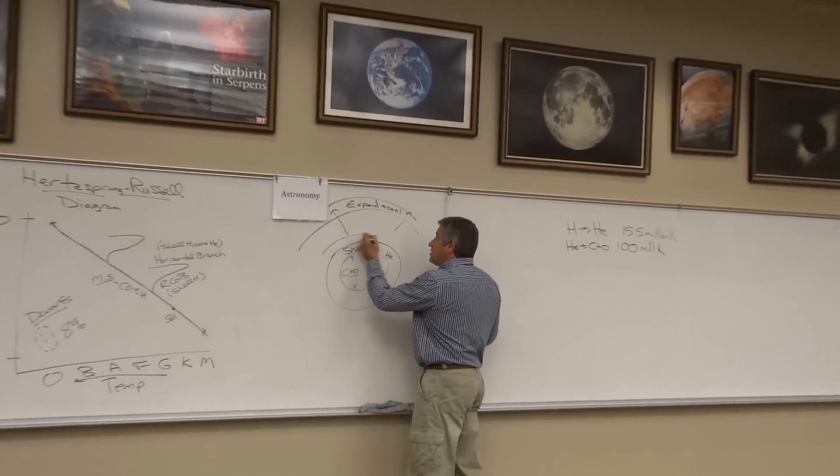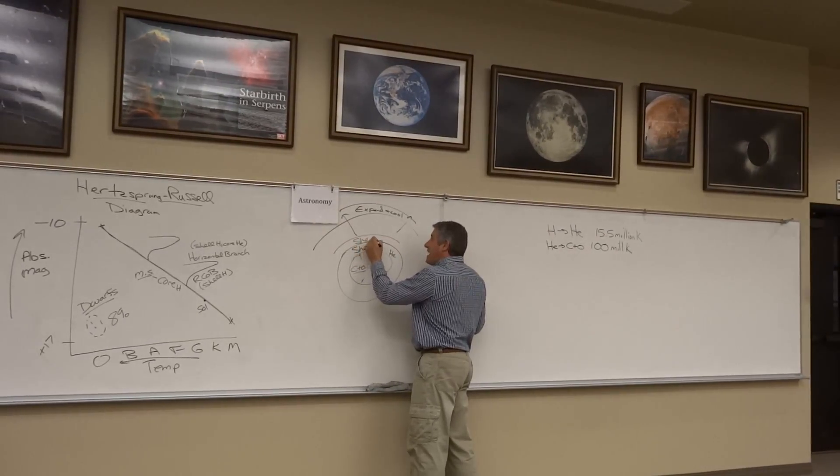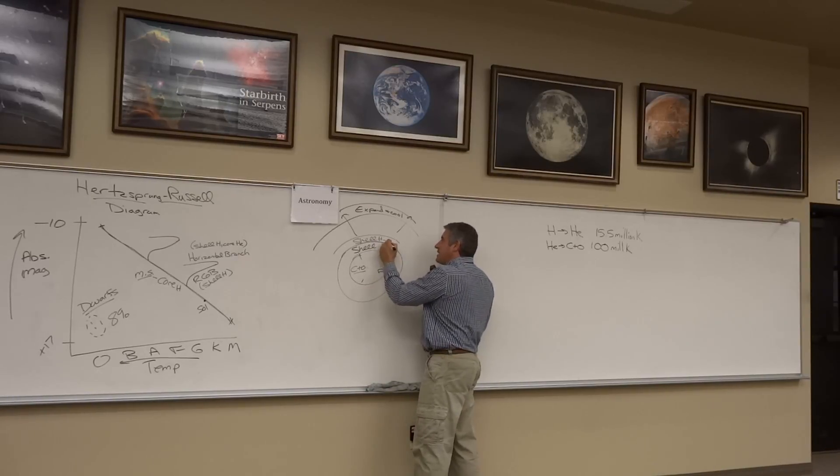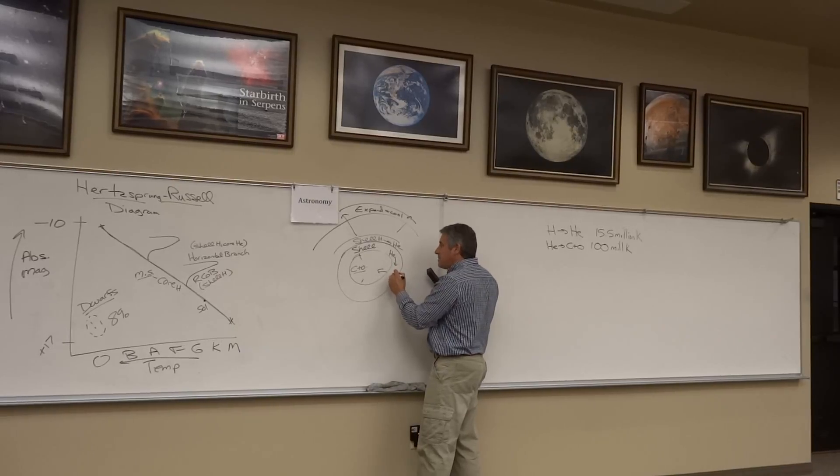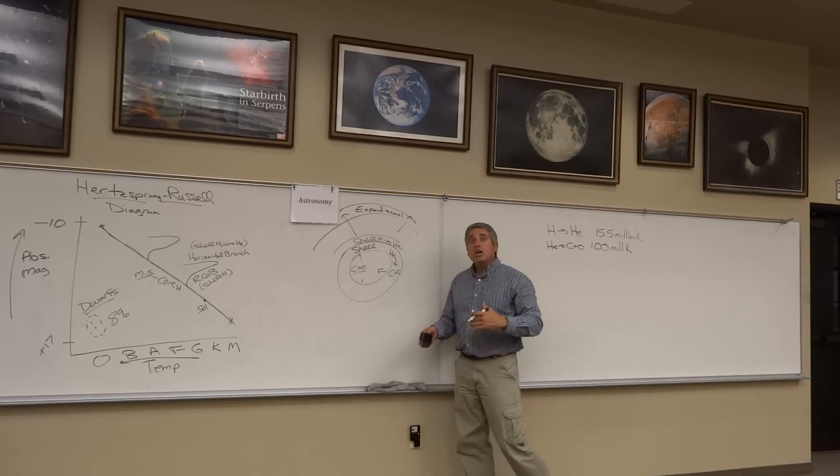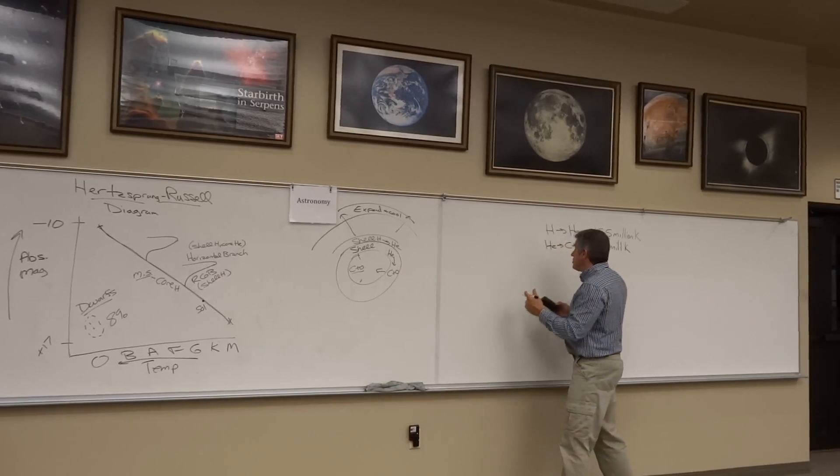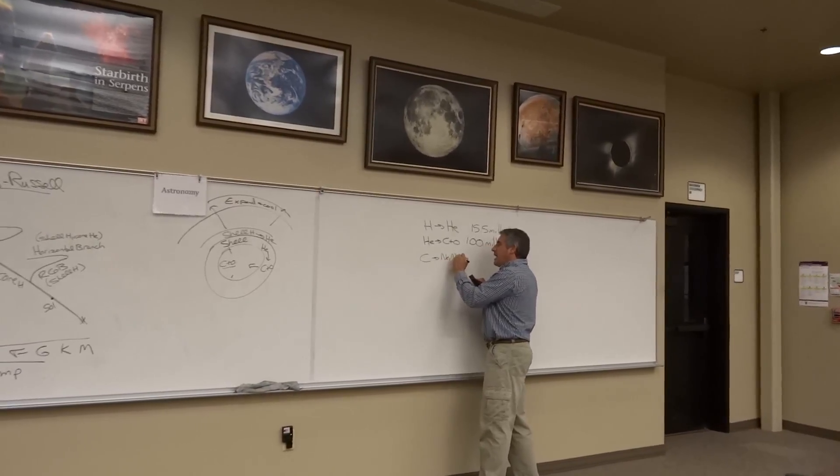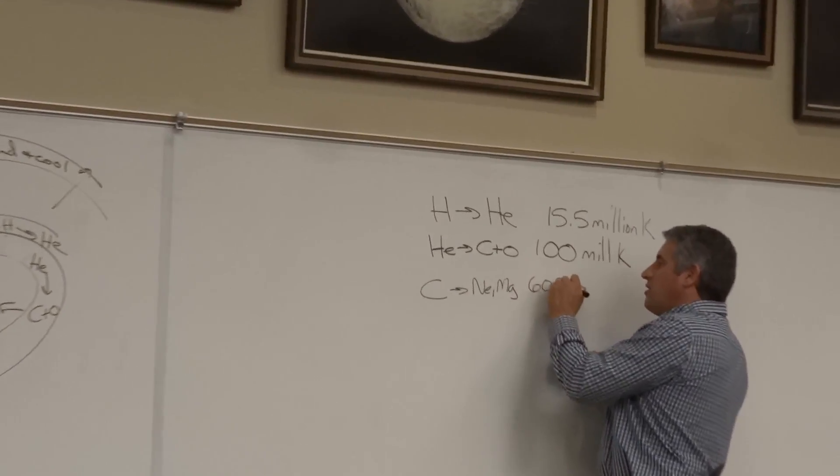At that point, a shell of hydrogen which missed out the first time and the second time ignites. A shell of helium ignites. A shell of hydrogen begins to burn into helium. A shell of helium begins to burn into carbon and oxygen. And the core of carbon and oxygen begins to look for its opportunity to burn. It turns out that carbon will burn into neon and magnesium at a temperature of 600 million Kelvin.